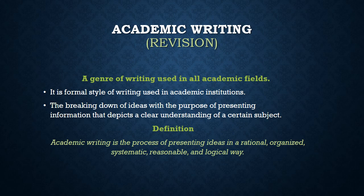The purpose of academic writing is presenting information that depicts a clear understanding of certain subjects — to inform the reader and audience. With the topic, we have to assign it in a very good, clear, and logical way to our audience or readers. The formal definition is that academic writing is the process of presenting ideas in a rational, organized, systematic, reasonable, and logical way.